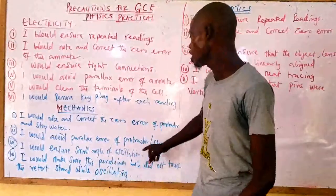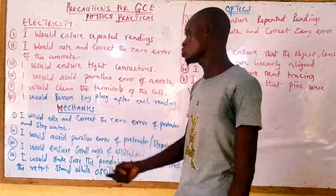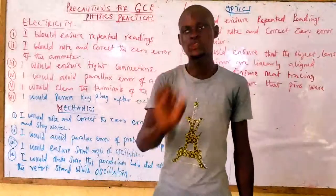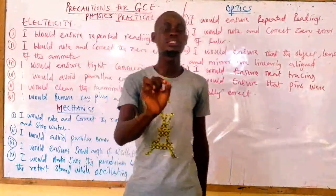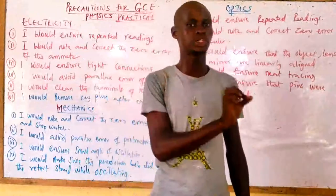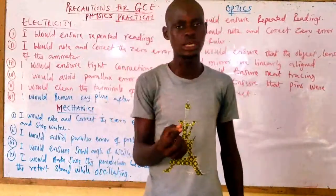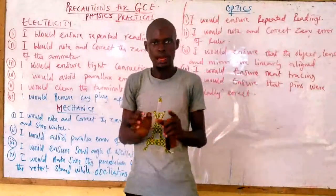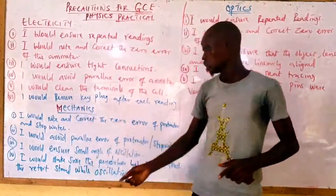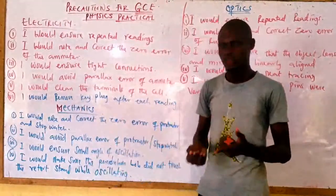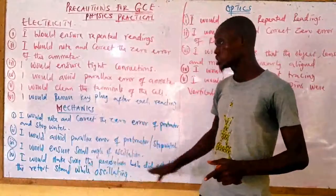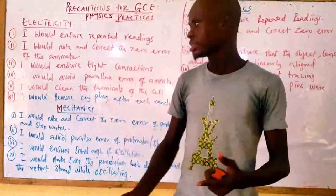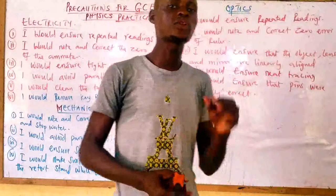The next precaution is: I would ensure the pendulum bob does not touch the retort stand. If the pendulum bob touches the retort stand, the body will not complete the same oscillation — it will stop partway through. So ensure that when performing the experiment it does not touch the retort stand while oscillating. Those are the precautions for mechanics.